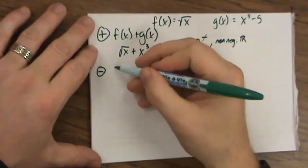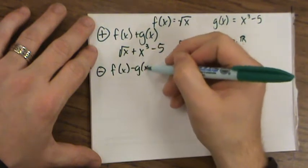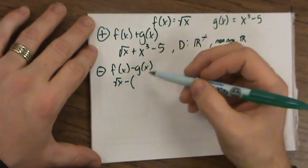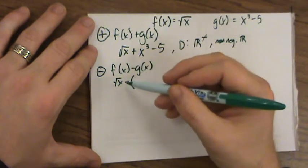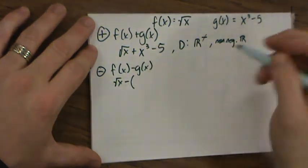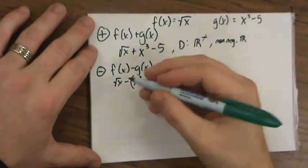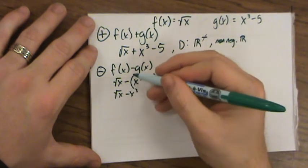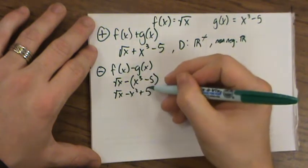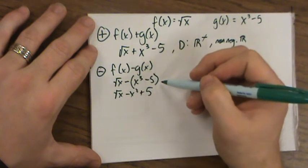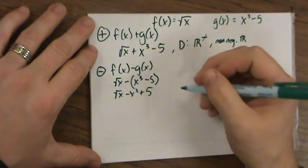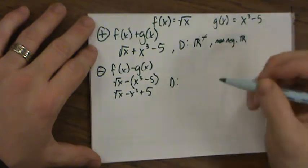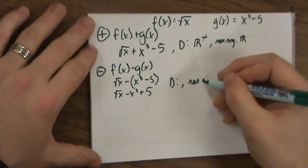So here we go with subtraction. F(x) minus g(x). The square root of x minus the whole function, g(x). Sometimes what gets missed is you'll just throw a negative in there, not put parentheses, and wind up not getting enough things negative, especially if the negative needs to be distributed. This is going to be the square root of x minus x to the third and minus a negative 5, so plus 5. The domain is the same, all non-negative real numbers.